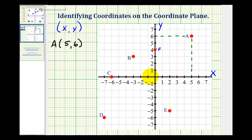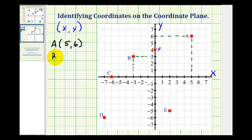If we look at point B, the x-coordinate would be negative three and the y-coordinate would be positive three. This is the x-axis and this is the y-axis. So point B has coordinates negative three, positive three.